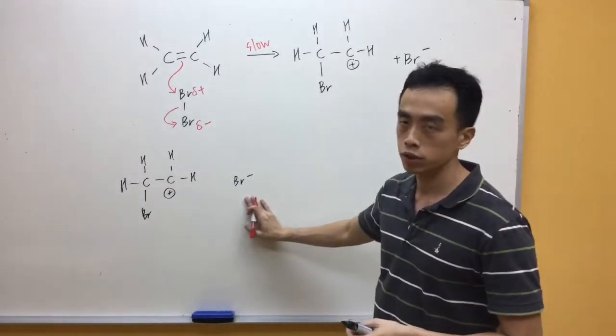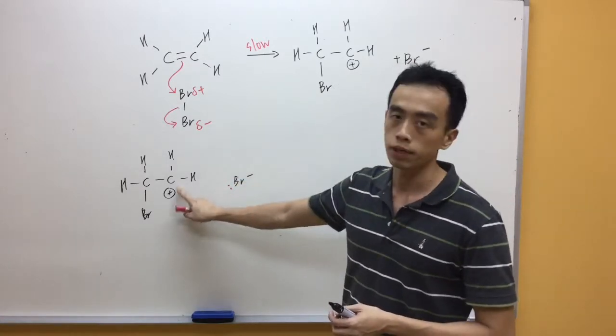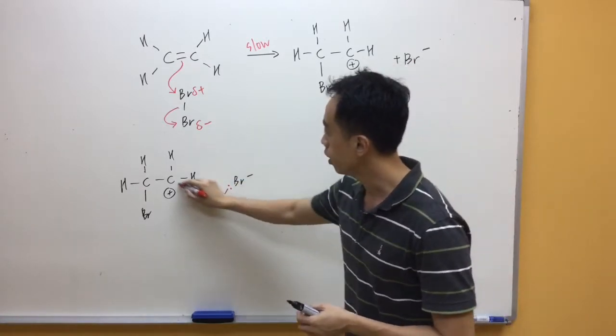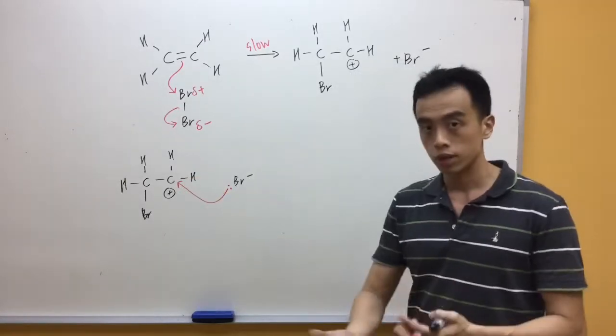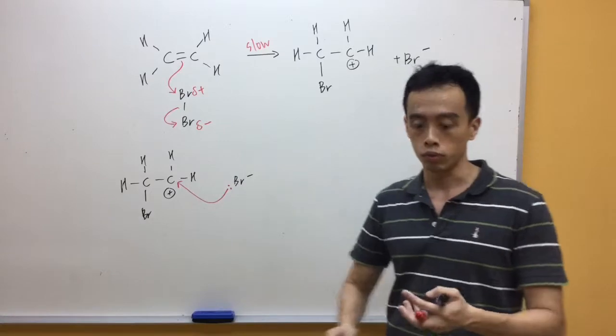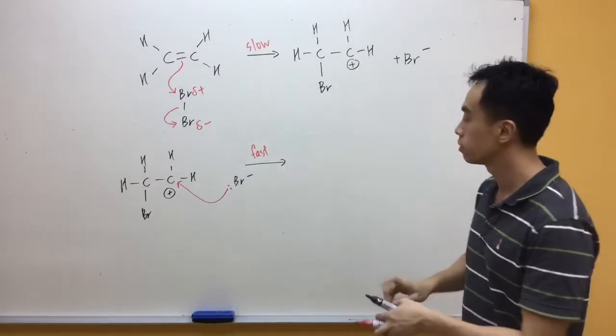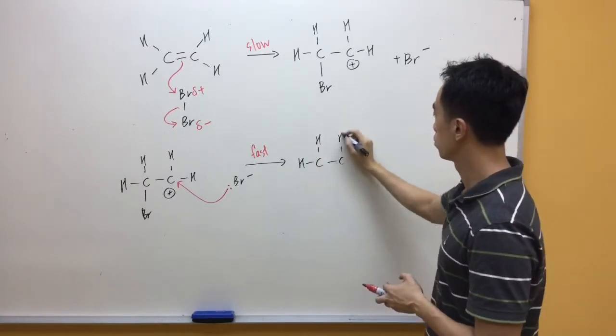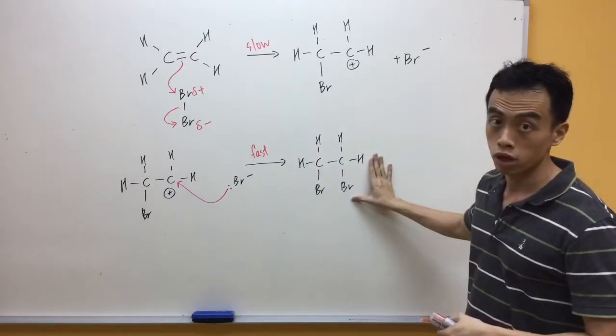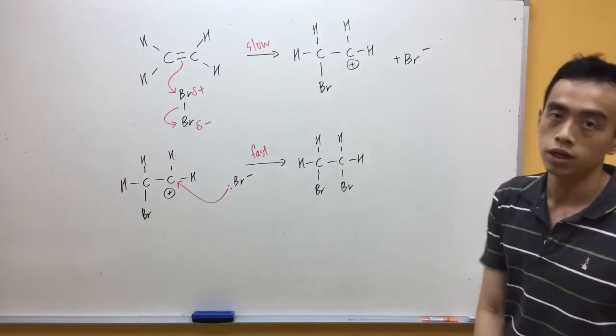How do we draw the arrow pushing? I have to show the lone pair of my Br⁻. When I draw, I point to carbon. I don't point to the charge. Draw the arrow, point to my carbon. Basically, what's happening is the Br⁻ will just join to my C⁺ to form the product. Of course, this will be the fast step. And so, you have your product form CH₂Br bonded to CH₂Br.